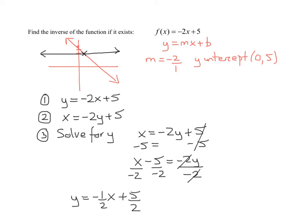And the last thing I have to do is how do I write the inverse of my function f? Remember, it's f with a negative 1 exponent of x equals negative 1 half x plus 5 halves.